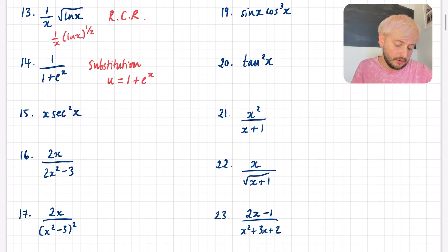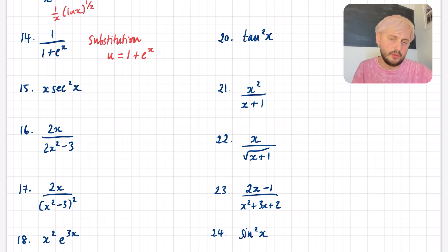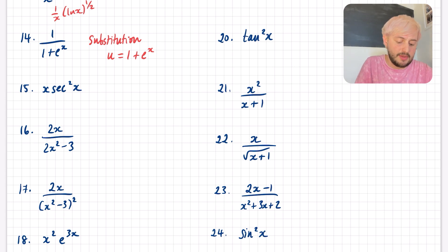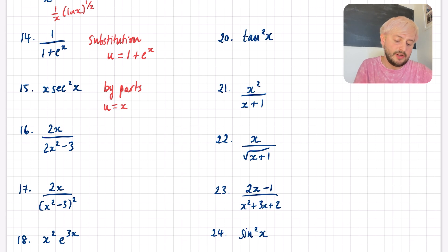Question 15: it's not a standard result. It's definitely a product of two things, which makes me think it's going to be the technique on the right-hand side of the flow diagram — integration by parts. The thing I will pick for U would be x, meaning x² is V' (the derivative of V). It's definitely not a reverse chain rule, because x is not the derivative of the other factor.